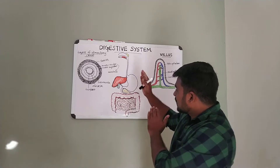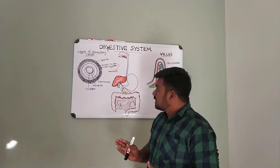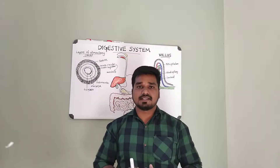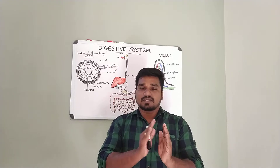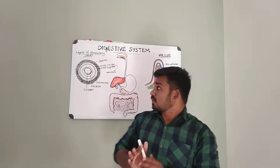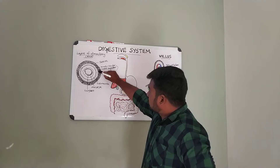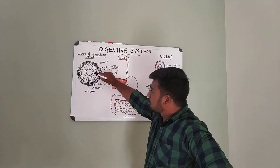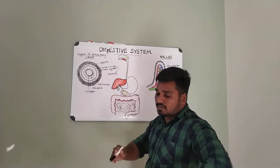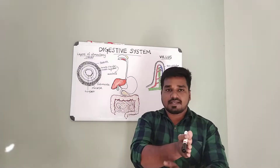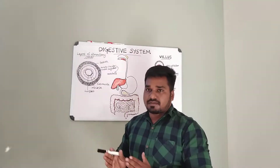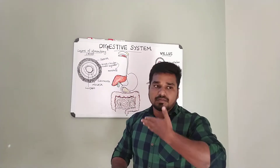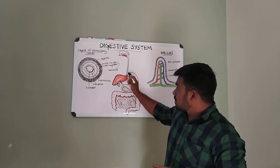The alimentary canal wall has several layers. The layers include the mucosa, submucosa, muscularis, and serosa. The outermost layer is the serosa, composed of fibrous tissue. Where the canal is within the peritoneal cavity, this outer layer is serous; elsewhere it is called adventitia.